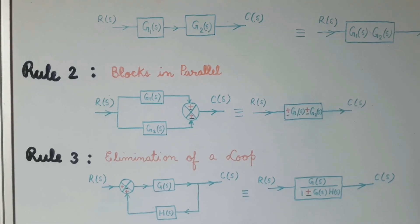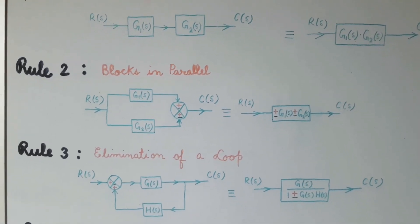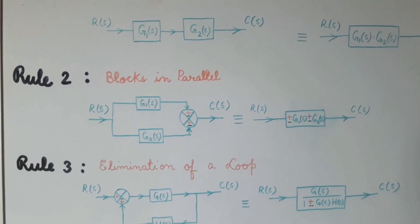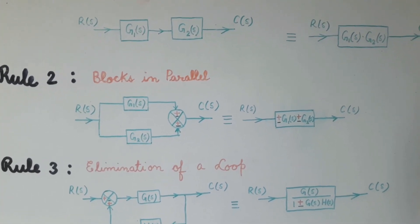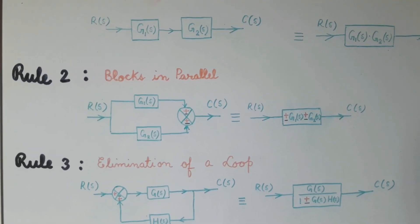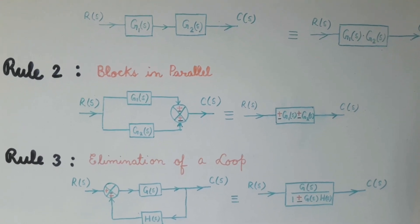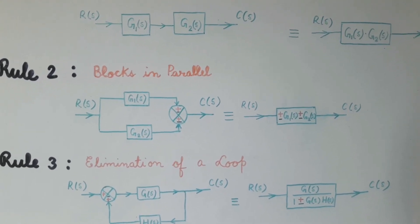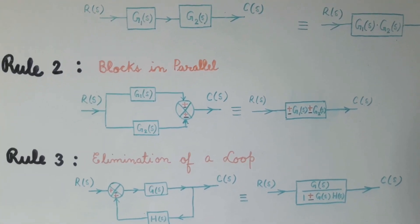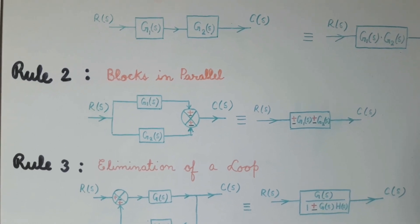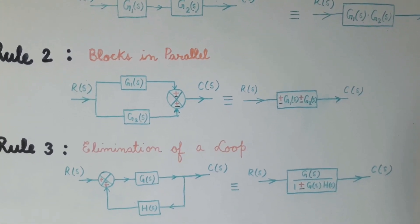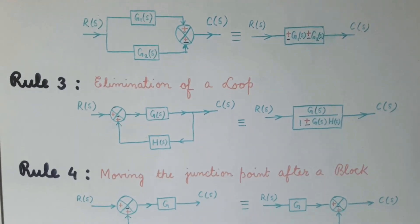That is, if there is a plus sign at the junction point with G1(s) then we will get +G1(s), and if there is a minus sign with G1(s) we will get −G1(s). Similarly, if there is a plus sign with G2(s) we will get +G2(s), and if there is a minus sign at the junction point with G2(s) we will get −G2(s). It depends upon the sign at the junction point.